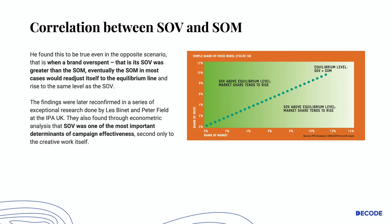So if you spend less than what your share of market is, your market share will fall. He found this to be true even in the opposite scenario: when a brand overspends, that is, the share of voice was greater than the share of market, eventually the share of market in most cases would readjust itself to the equilibrium line and rise to the same level as the share of voice. These findings were later reconfirmed in a series of exceptional research done by Bennett and Field at the IPA. They also found through econometric analysis that share of voice was one of the most important determinants of campaign effectiveness, second only to the creative work itself.